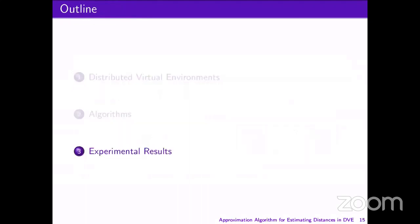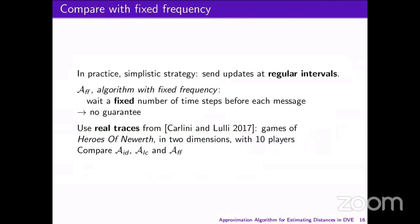Now on to the experimental results. In practice, most online games use a simplistic strategy that consists in sending messages at regular time intervals. We call this algorithm AFF — the algorithm with fixed frequency — where each player waits a fixed number of time steps before sending an update to the other players. The main problem is that this algorithm does not have any guarantee on the maximal error.